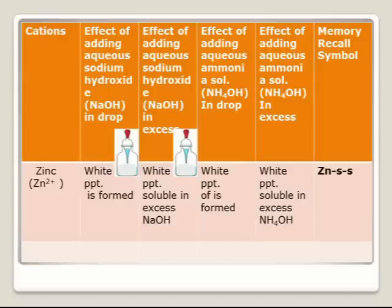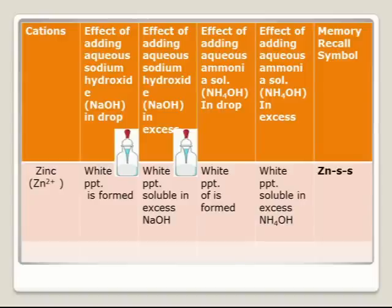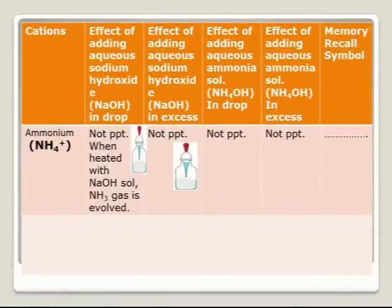Zinc is similar to the previous ions, but here zinc is soluble in both excess sodium hydroxide and excess ammonium hydroxide. Zinc also forms a white precipitate, but it is soluble in excess sodium hydroxide and soluble in excess ammonium hydroxide. The recall symbol is ZNSS: ZN stands for zinc; the first S stands for soluble in excess sodium hydroxide; and the second S stands for soluble in excess ammonium hydroxide.